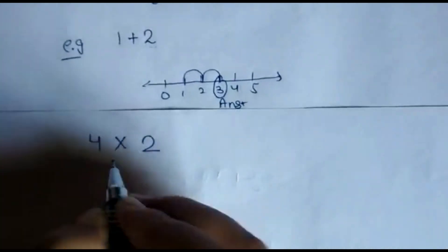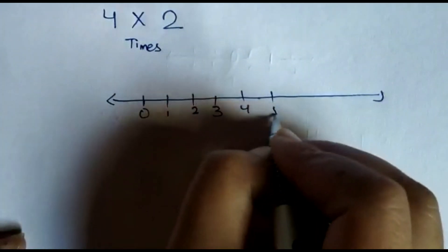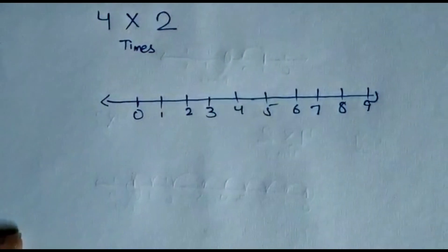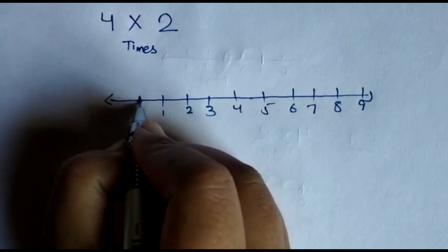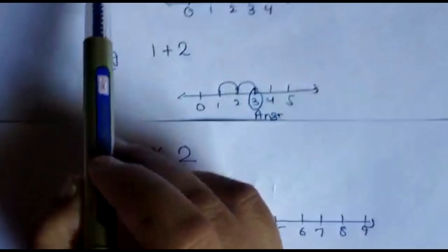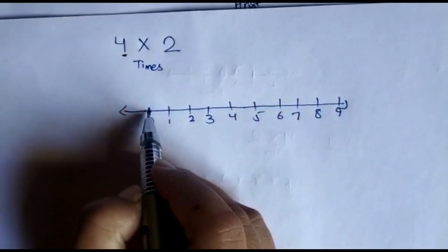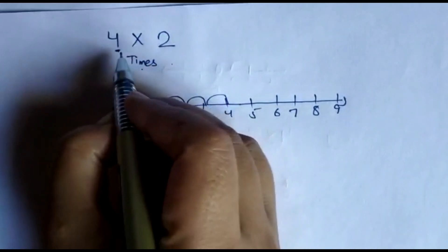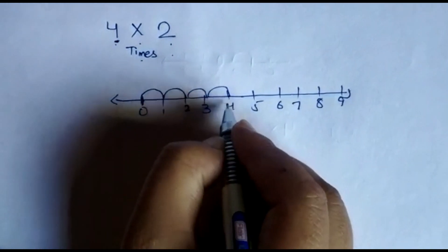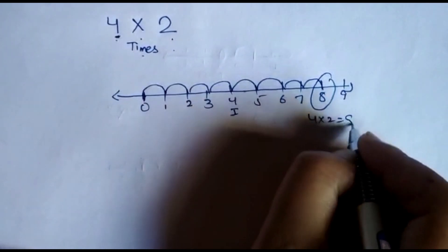Now let's take a multiplication example: 4 × 2, which means 4 times 2. In multiplication, we always start counting from 0. From 0, we take a jump of 4 numbers — that is one jump. We do this 2 times. First jump: 1, 2, 3, 4. Second jump: 1, 2, 3, 4 again. So the answer is 4 × 2 = 8.